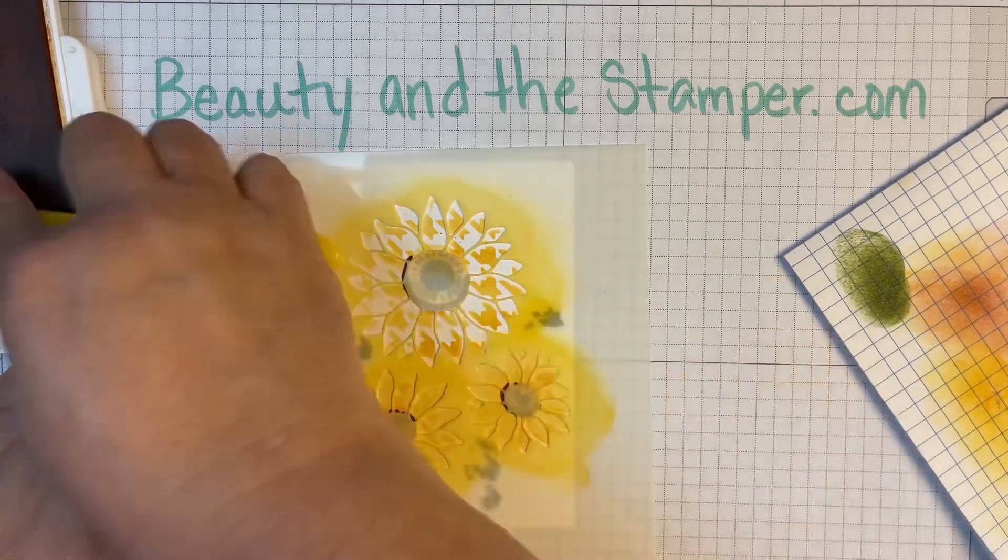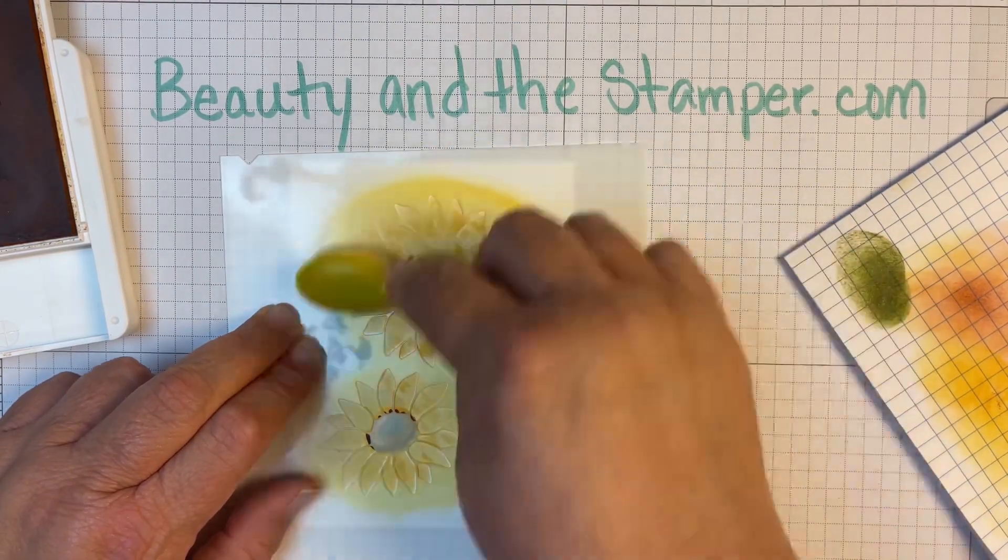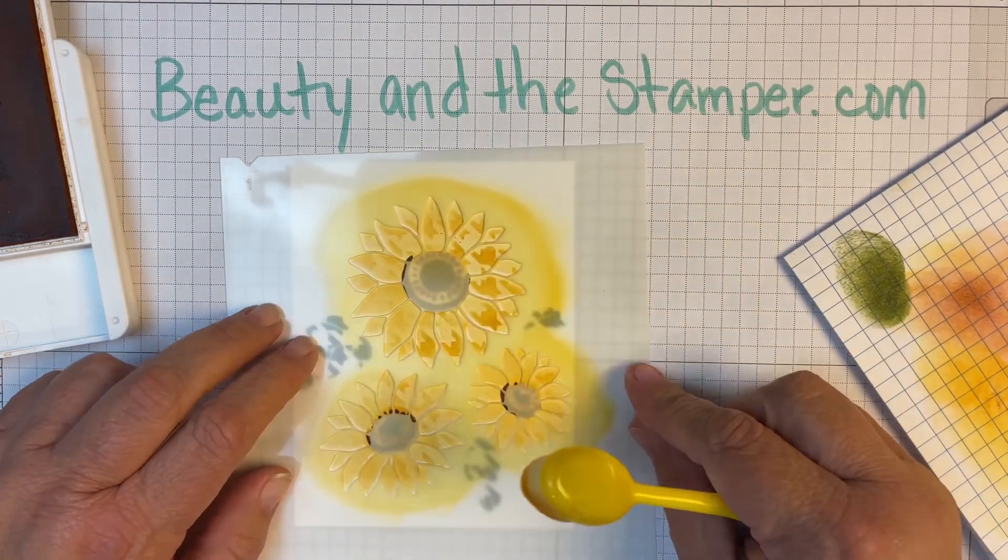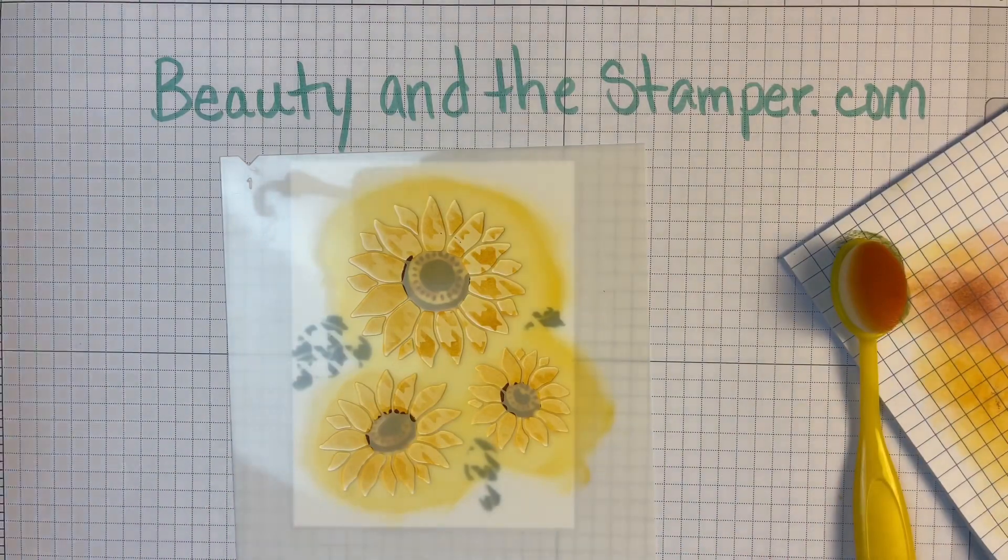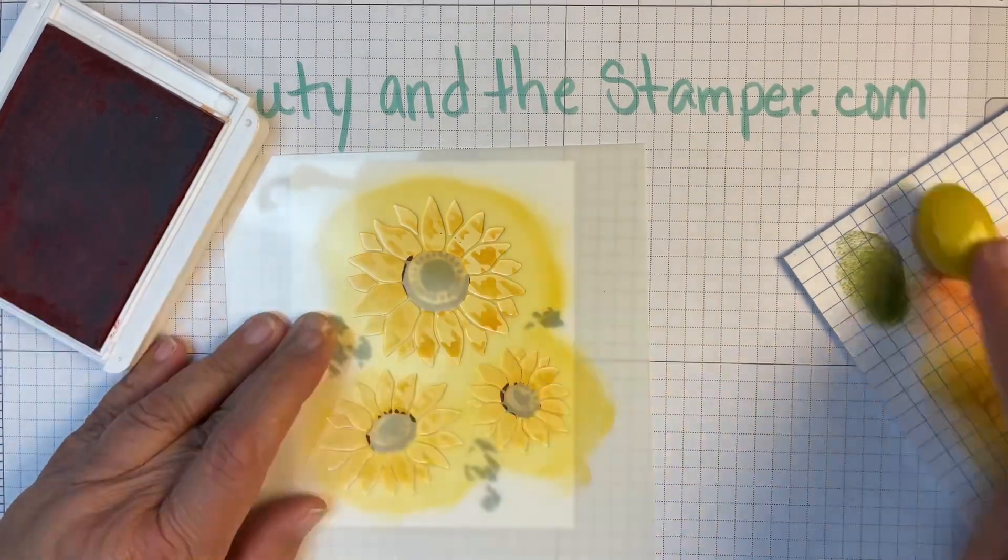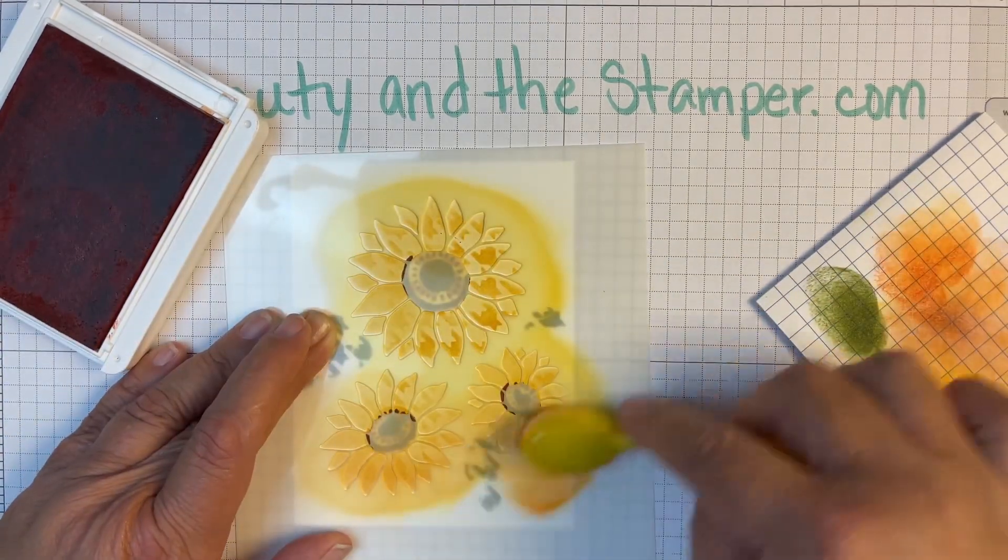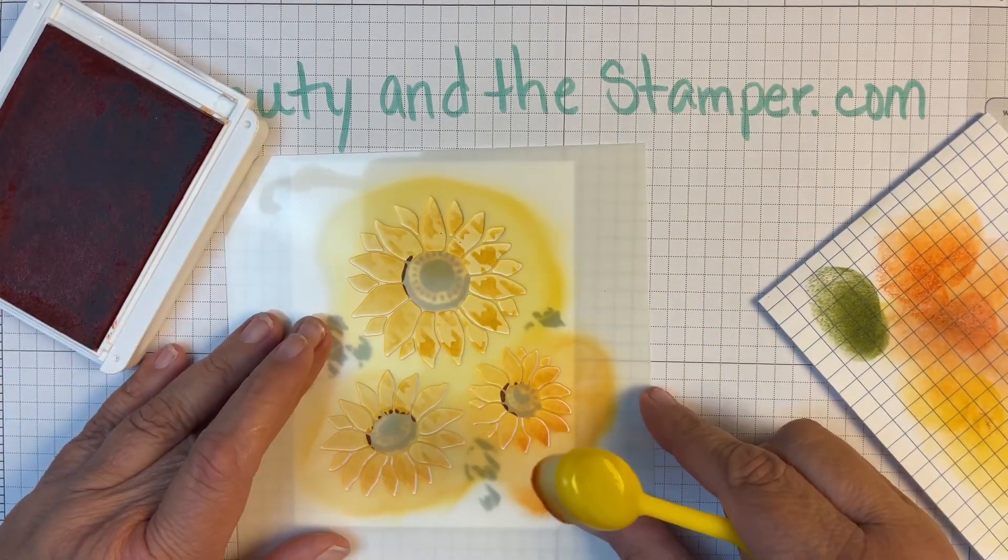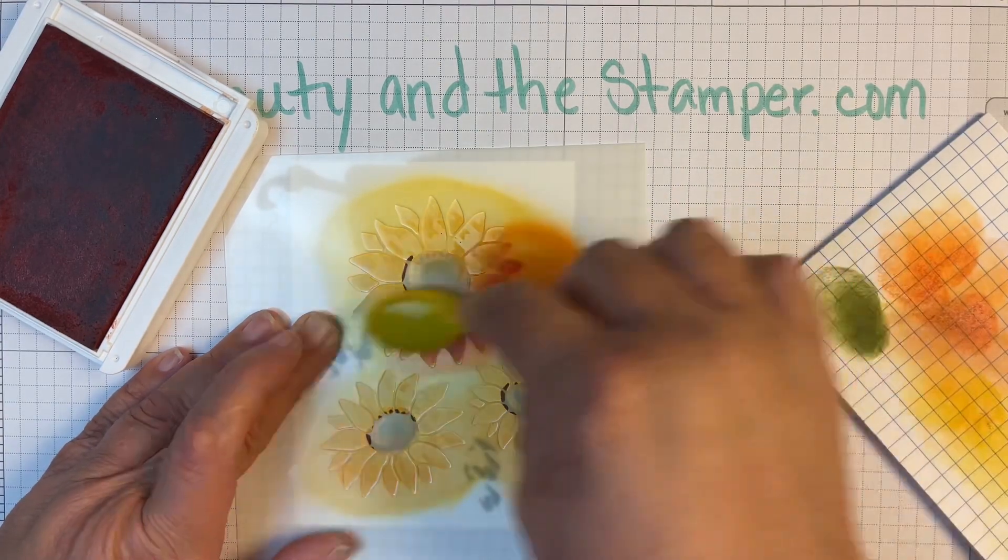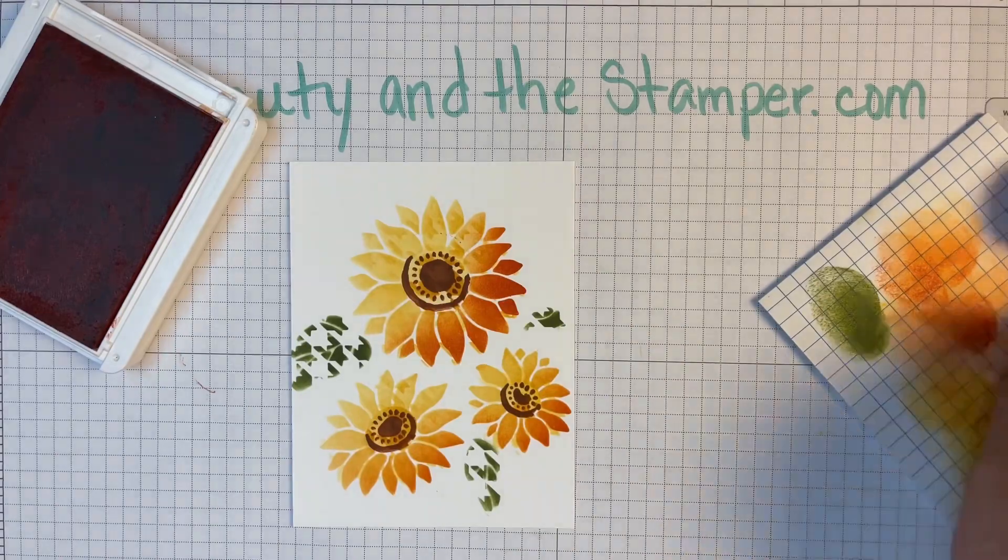I want to give it a little bit more shading, so at this point I'm going to bring out my pumpkin pie and put it along the bottom right side to make it look like some light is coming from the upper left side. Look at how pretty that came out!